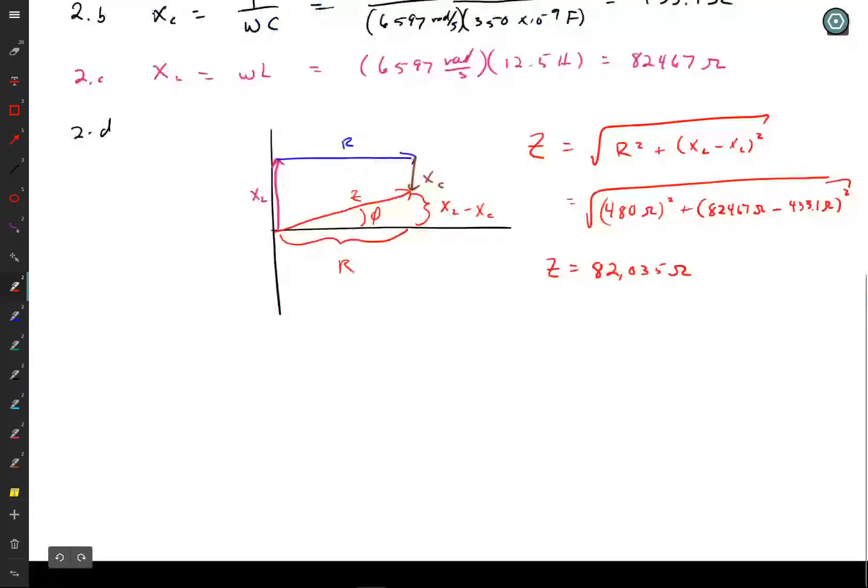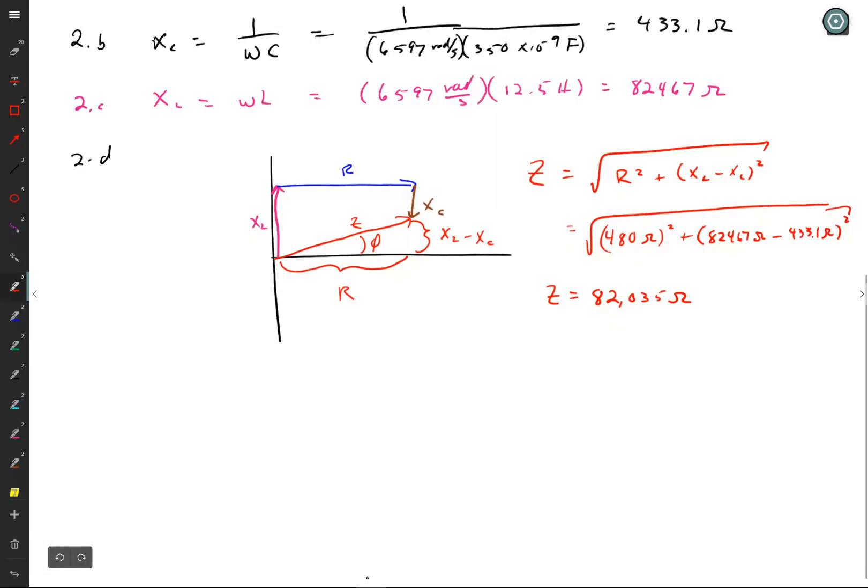So notice the total impedance is less than the inductive impedance. How is that possible? Because the capacitive impedance was working against that. Now the apparent power. To find the apparent power, I just have power apparent is equal to VI. Well, what is I? I is going to be equal to V over Z. Remember Ohm's Law, I equals V over R. Well, in this case, it's impedance instead of resistance, but it's still the same rule. So I could put this in here, and I could say power is equal to V squared over Z. But I'm going to actually calculate what the current is. So my voltage was 10 volts, and my Z was 82,035 ohms. So that gives me a current of 0.1219 milliampere. So that's a small current.